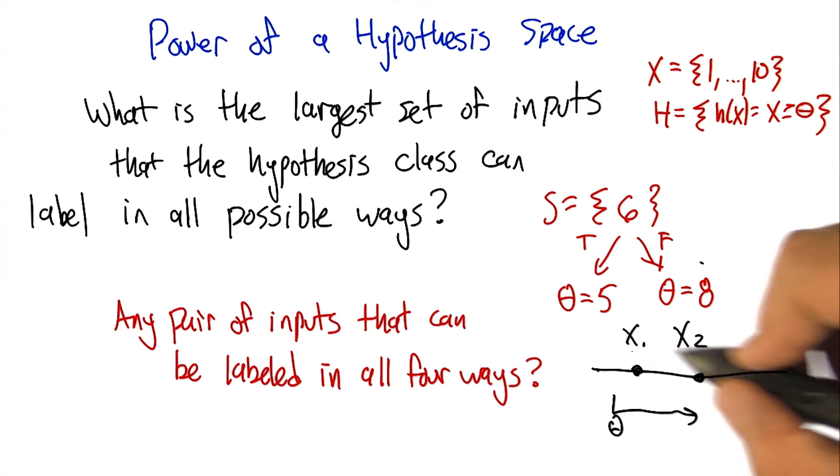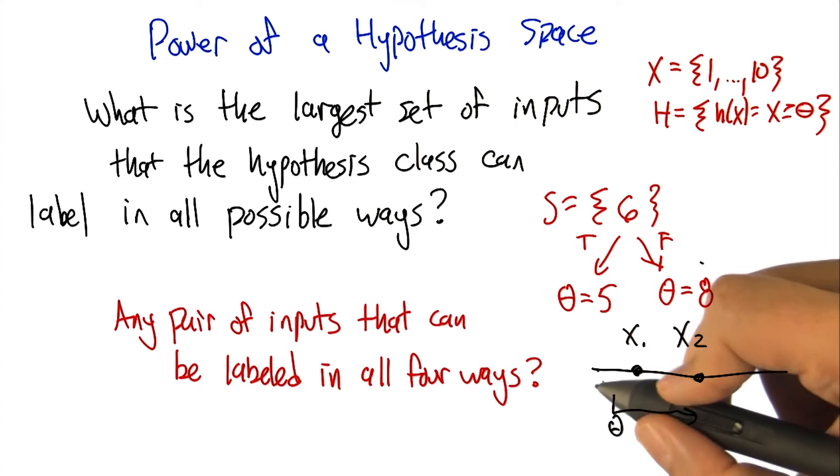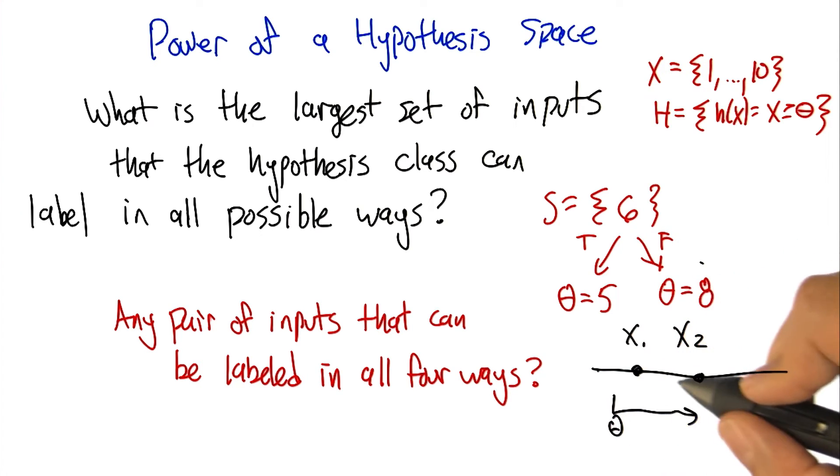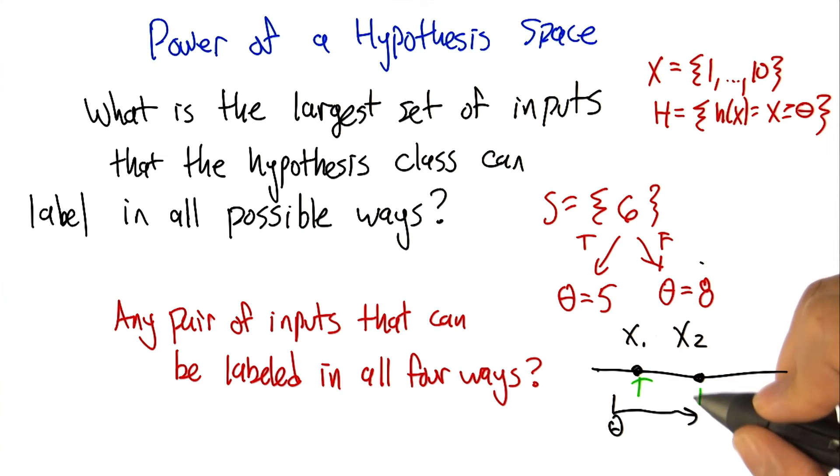In particular, pick any two points, x1 and x2 on the line. As we roll theta—as we consider sets of thetas moving from left to right—it starts off where x1 and x2 are both labeled as true.